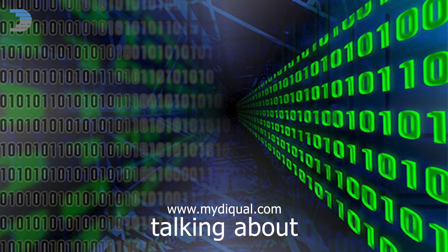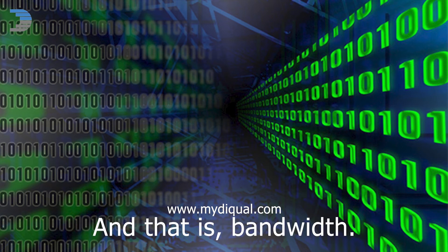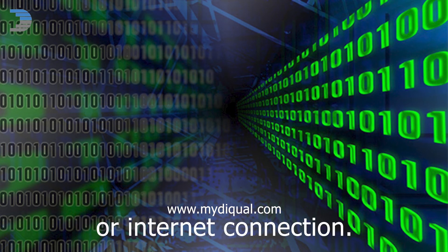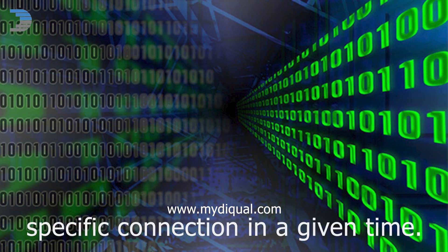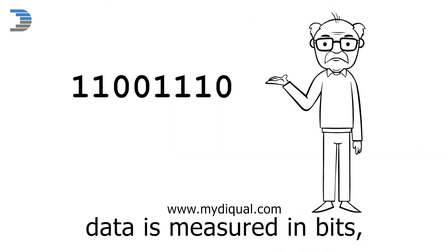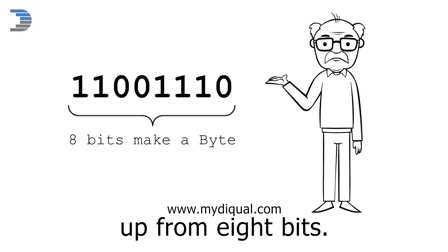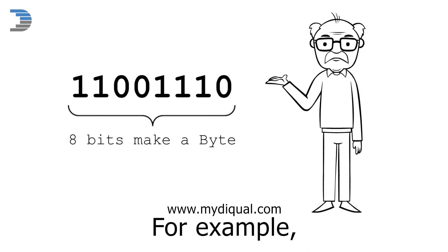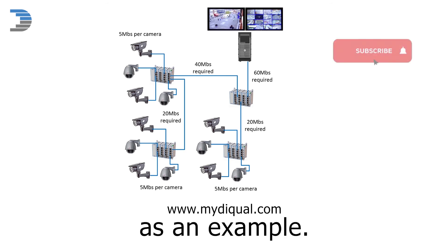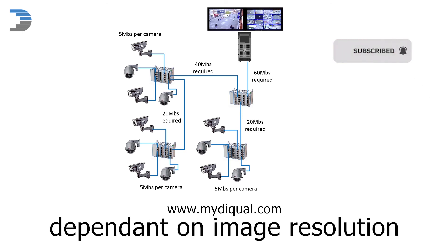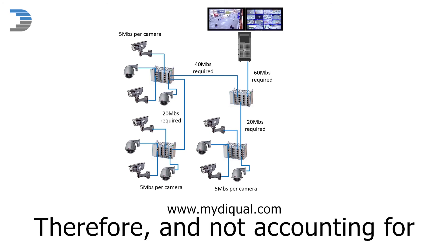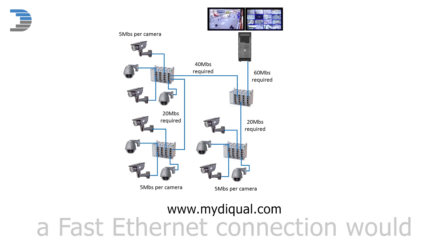There is one last thing to consider when talking about system network infrastructure, and that is bandwidth. The term network bandwidth refers to the maximum data transfer rate of a network or internet connection. Bandwidth calculations measure how much data can be sent over a specific connection in a given time. Data is measured in bits and bytes per second — one byte of data is made up of 8 bits, and a data bit is a binary 1 or 0. Take a CCTV camera system as an example: 12 HD IP cameras, dependent on image resolution and image rate, might require 5 megabits per second bandwidth each, requiring a total of 60 megabits per second. Therefore, not accounting for any other network devices that might use the link, a fast ethernet connection would suffice. This diagram illustrates how bandwidth requirements build up in a network.